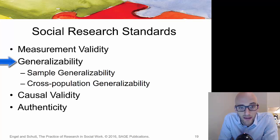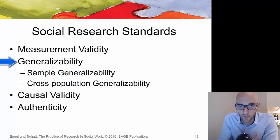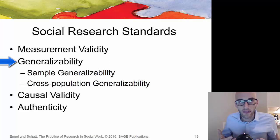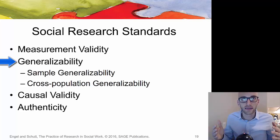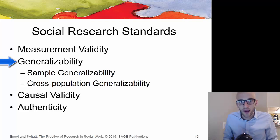Generalizability — sample generalizability and cross-population generalizability — asks whether results of a social science paper are really generalizable across different populations and cultures, or whether they only exist within the vacuum of the research conducted. We try to minimize noise in the data and keep studies well controlled, but it's kind of pointless if you can't generalize your findings, making generalizability another important concept to consider.